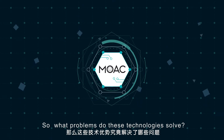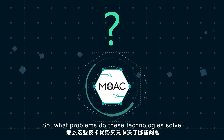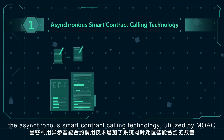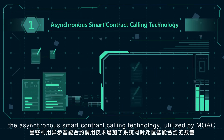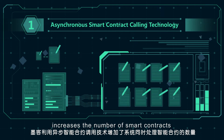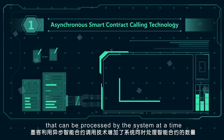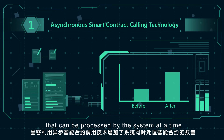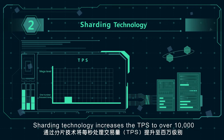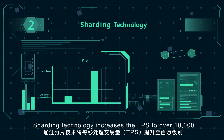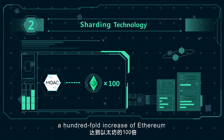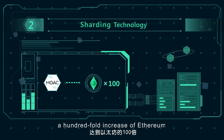So what problems do these technologies solve? First, the asynchronous smart contract calling technology utilized by Moac increases the number of smart contracts that can be processed by the system at a time. Second, sharding technology increases the TPS to over 10,000, a hundred-fold increase of Ethereum.